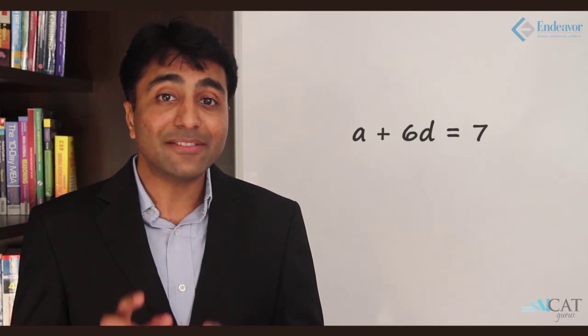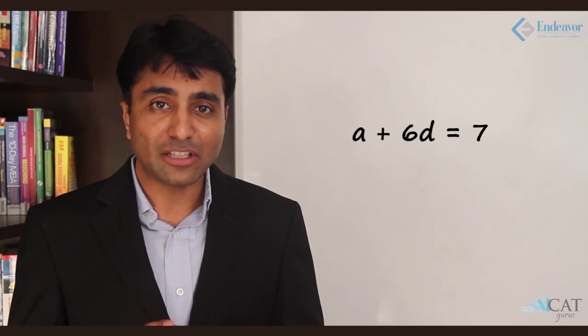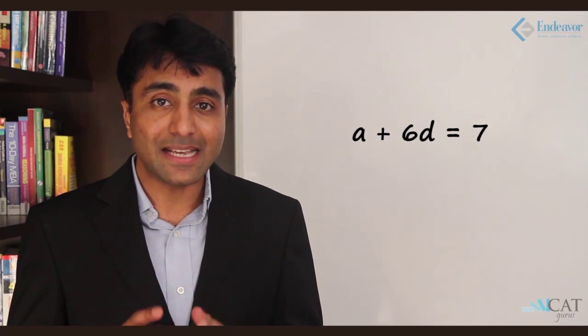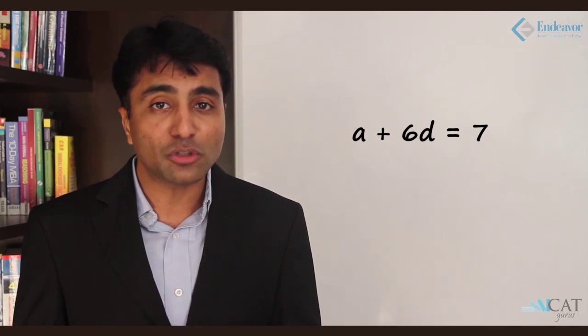We have many unknown variables here — we do not know the first term and we do not know the common difference. So we will first find the first term and the common difference. From the first condition, the seventh term is 7, so a plus 6d is equal to 7. The sum up to 14 terms is 91.